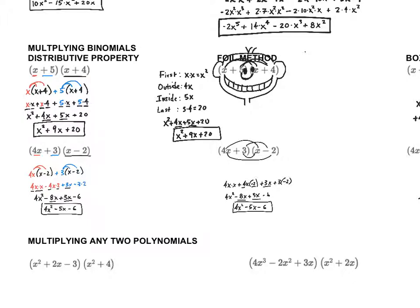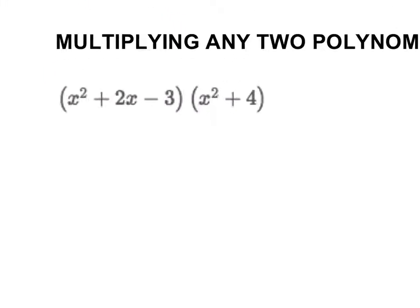Here's an important limitation: the FOIL method only works when you have binomials. It doesn't work for something like a trinomial times a binomial. So you have to be careful. When you have more than two terms, I really prefer the box method — it's just an easier way to handle it.